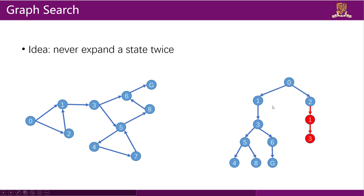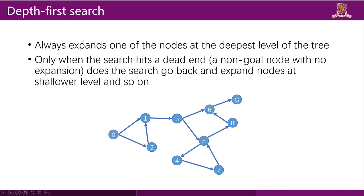The main difference between graph search and tree search is that graph search will not expand a state twice. For example, if you do a depth-first search on a graph starting from node 0, you might visit node 1 twice since node 1 is also a child of node 2. But in graph search we will not do this — we will not visit node 1 again.